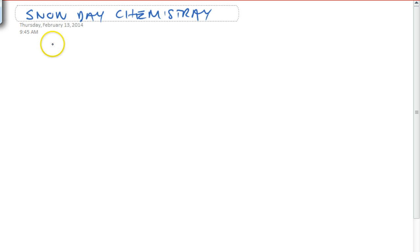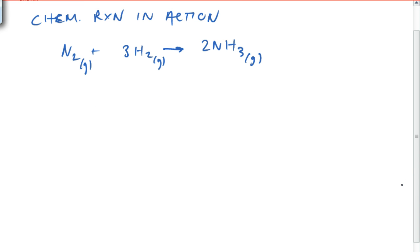So I want to start with a chemical reaction in action. Let's look at nitrogen and hydrogen reacting to make ammonia. Now these would occur in the gas phase, so we'll put gas, a little g for gas under each of those.